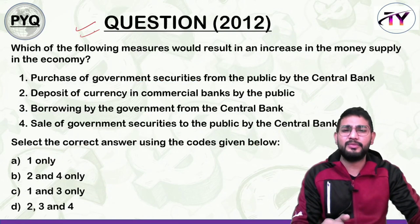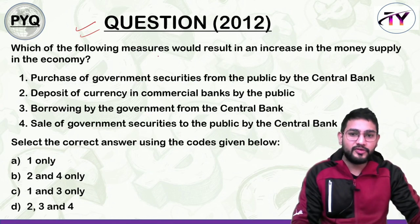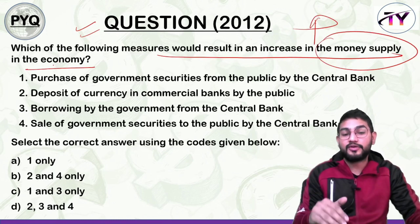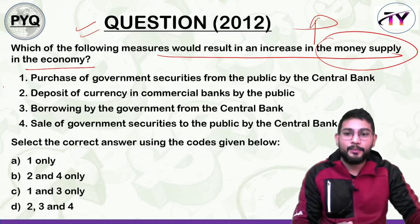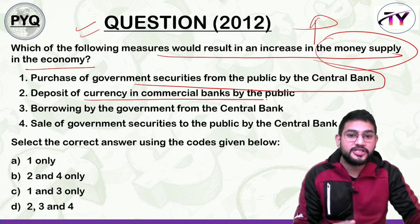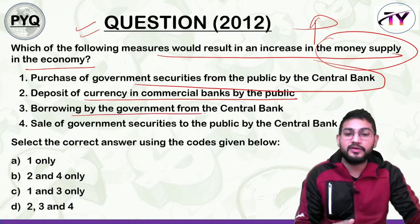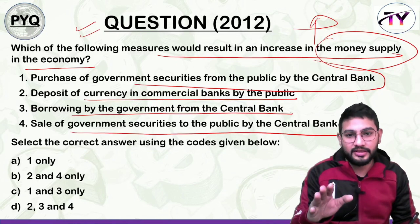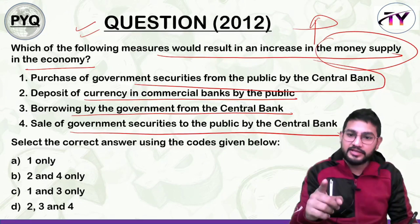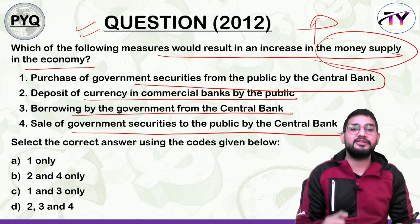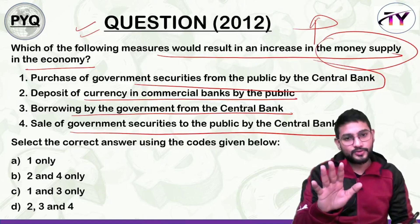In 2012, UPSC asked this very beautiful conceptual question: 'Which of the following measures would result in an increase in the money supply in the economy?' Options: 1. Purchase of government securities from the public by the central bank. 2. Deposit of currency in commercial banks by the public. 3. Borrowing by the government from the central bank. 4. Sale of government securities to the public by the central bank. Pause and write your answer in the comment box.